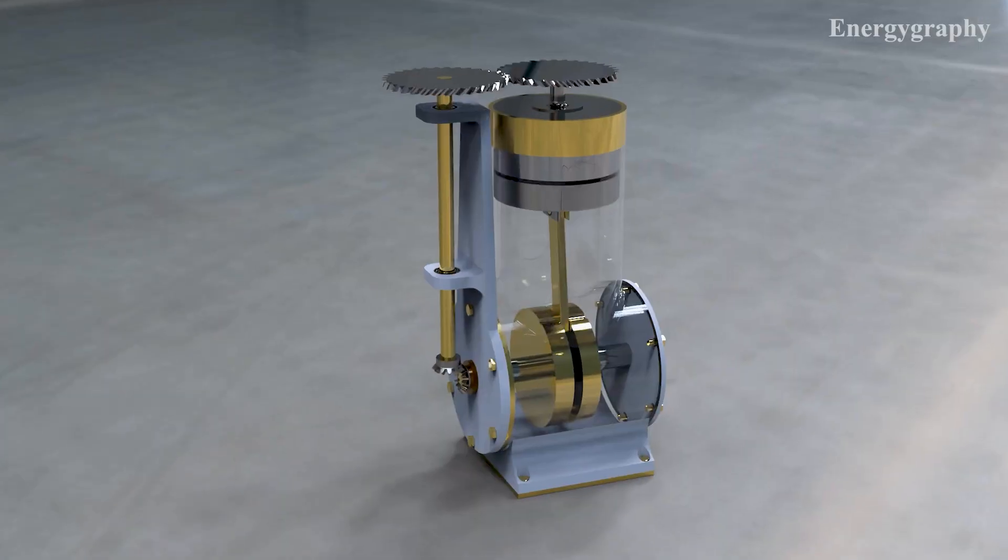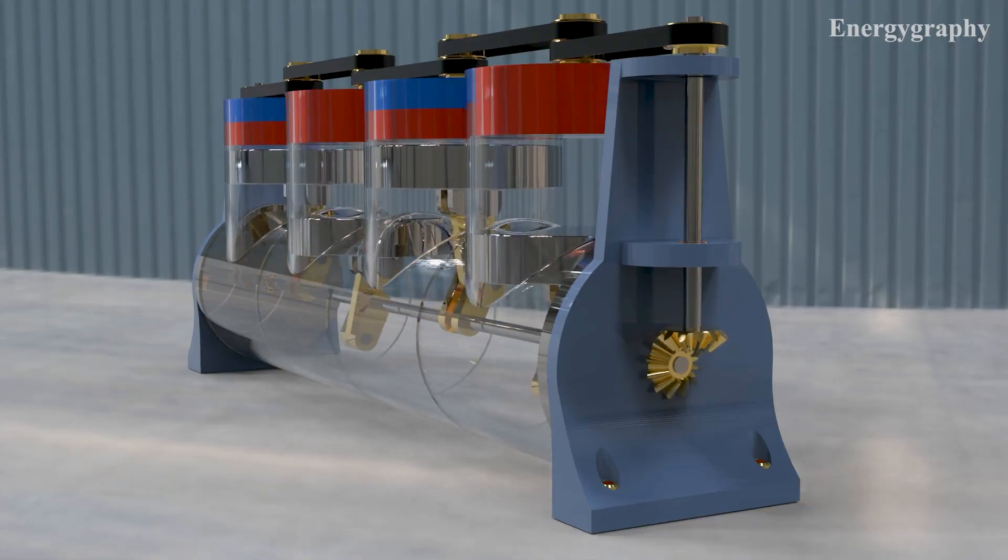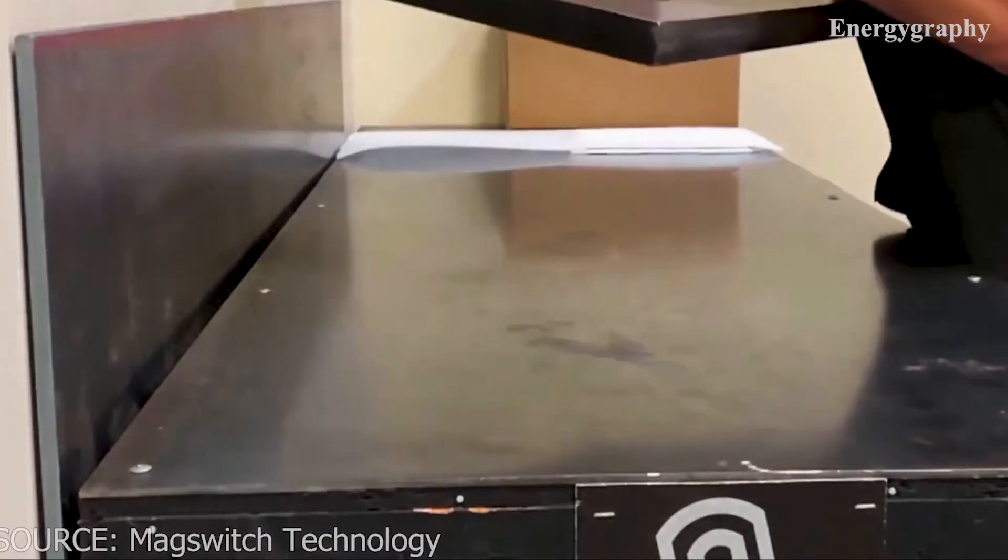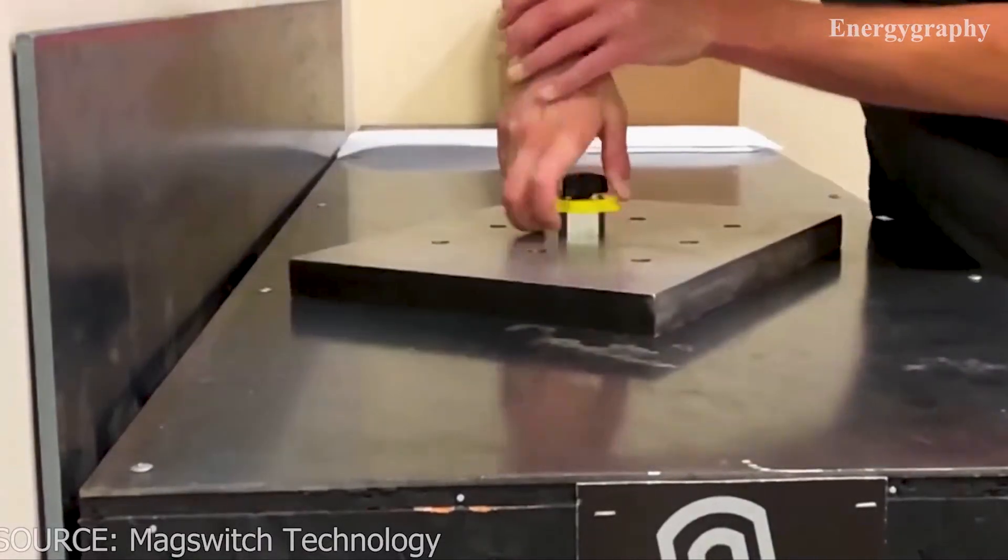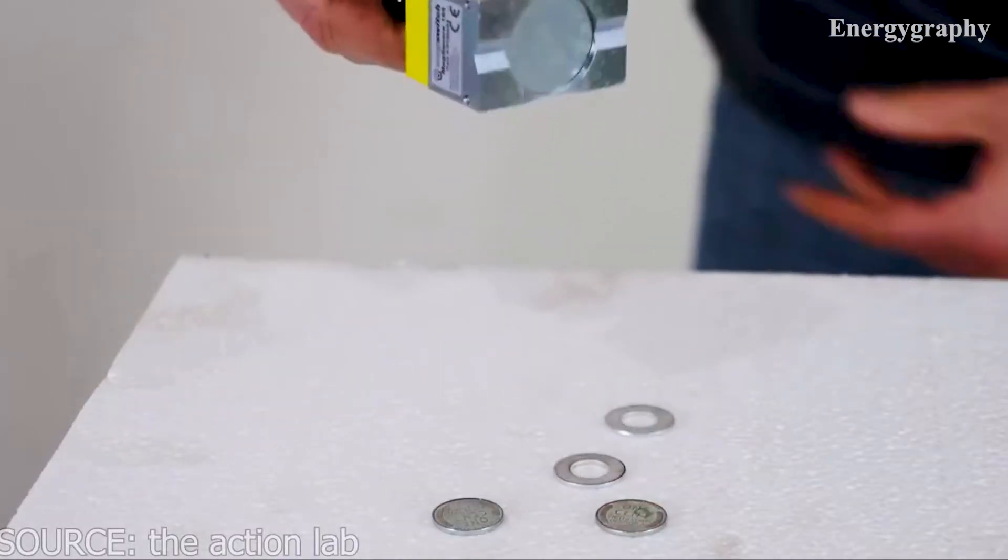But how does it work? This is the first version and this is the new 4-cylinder version. MagSwitch technology is used in this engine. MagSwitch is a technology to turn permanent magnets on and off.